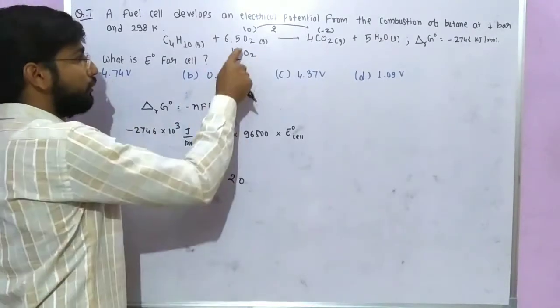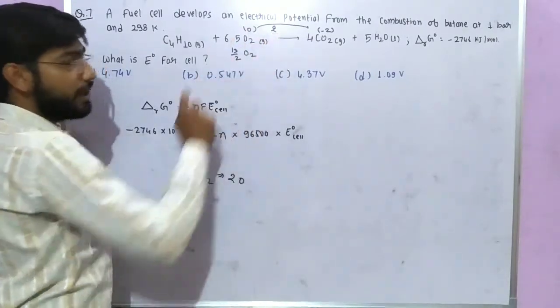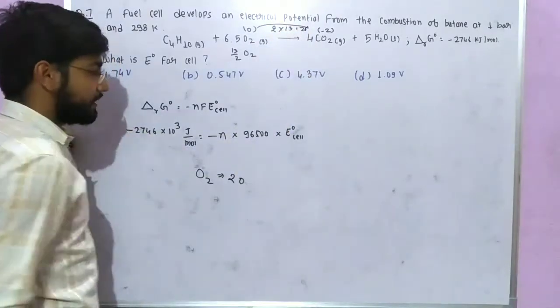So the total oxygen atoms will be 13. 13 oxygen atoms. Each oxygen atom will grab two electrons, so the 13 oxygen atoms will take over 26 electrons.